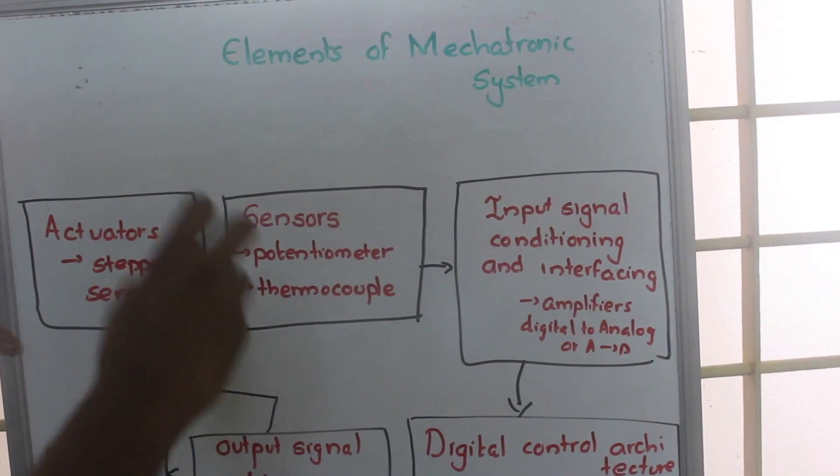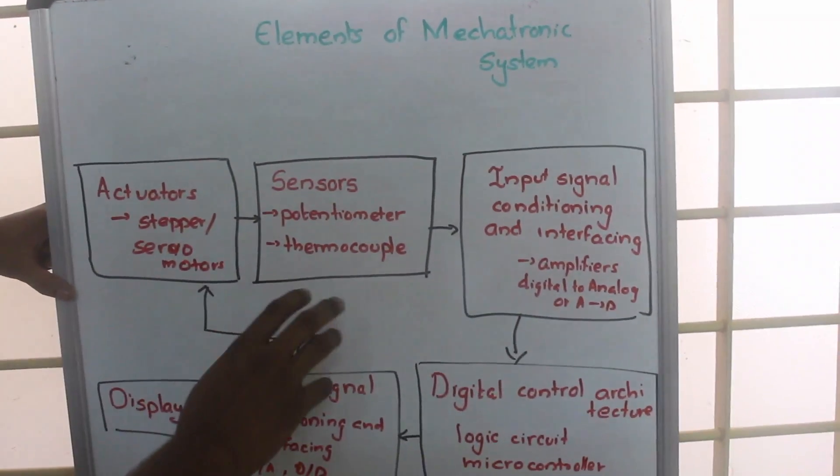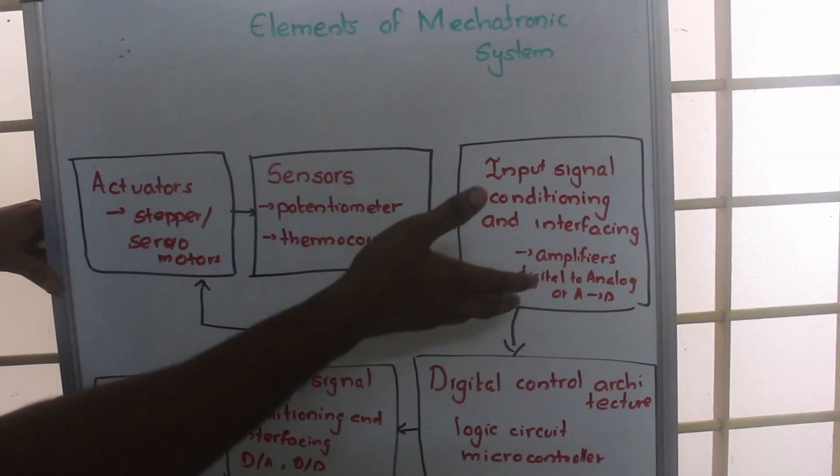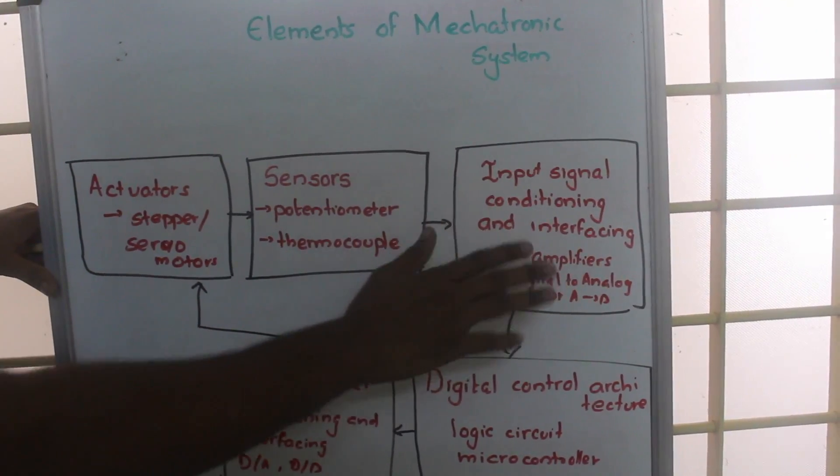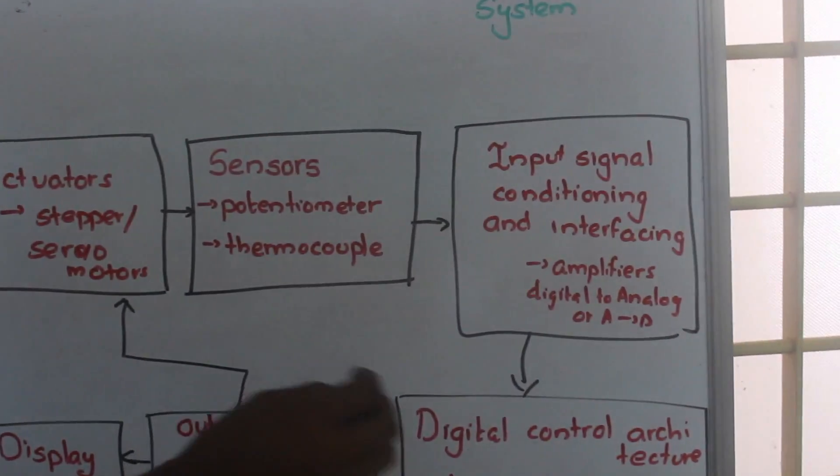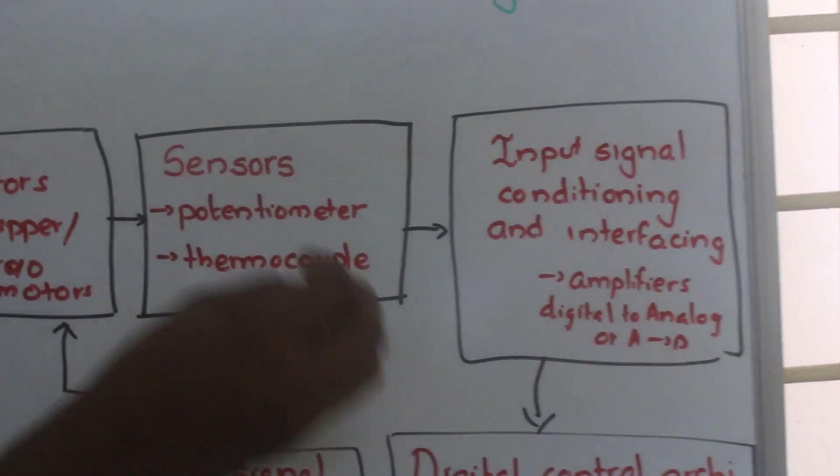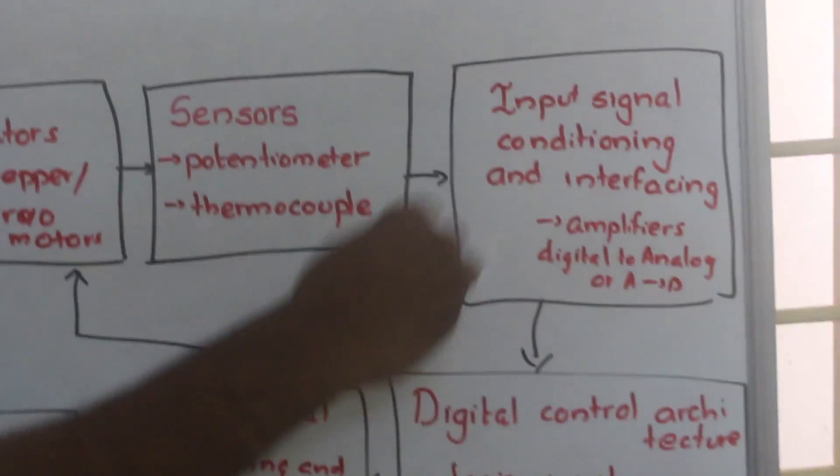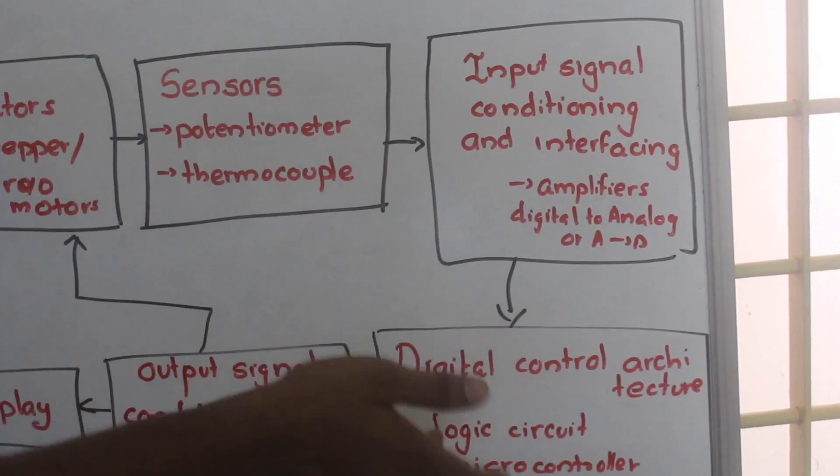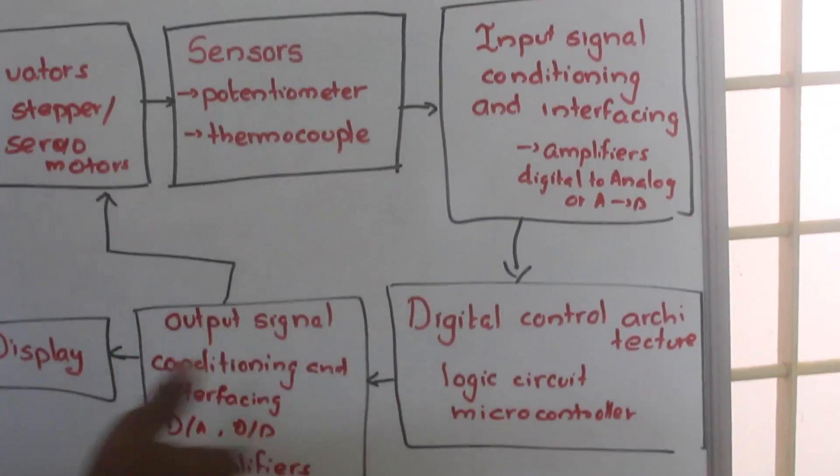That change in environment is sensed and then the signal is sent to input signal conditioning and interfacing. There we use amplifiers to amplify the signal, and also there will be analog to digital converter or digital to analog converter as per our requirement.